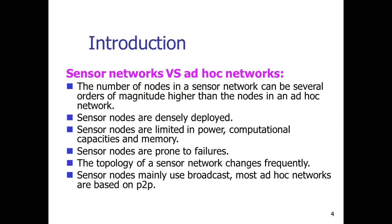Sensor nodes are densely deployed and are limited in power, computational capabilities, and memory compared to ad hoc networks. Sensor nodes are also prone to failure, while in ad hoc networks, since nodes consist of mobile devices or laptops, the chances of failure are less. The topology of a sensor network changes frequently, and sensor nodes mainly use broadcast communication, while ad hoc networks use point-to-point communication.